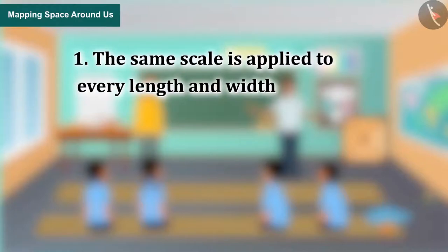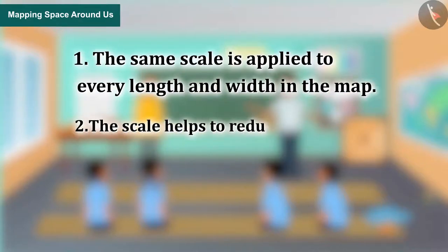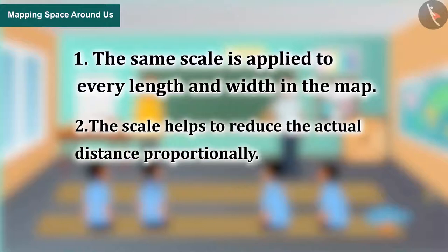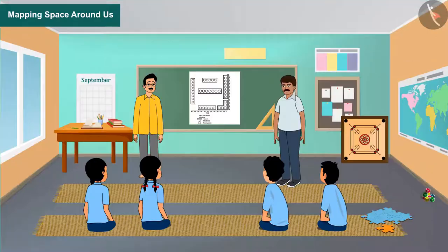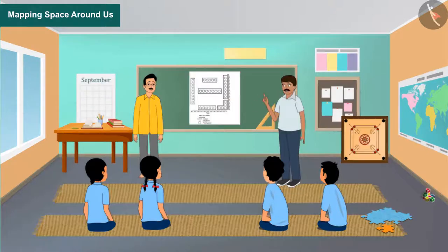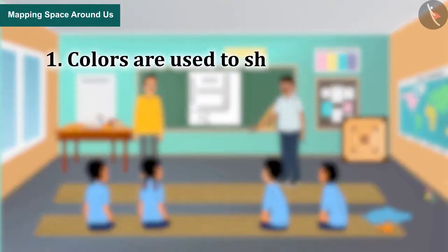The same scale is applied to every length and width in the map. The scale helps to reduce the actual distance proportionally. If you pay attention to the given map, you will see that one centimeter has been used here for 500 centimeters.